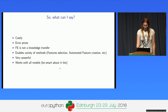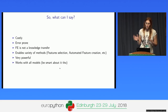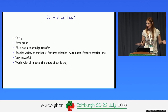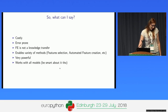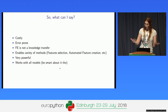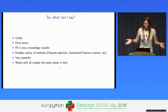Feature engineering is not knowledge transfer, though it can be used as part of it — you train models on certain data that at first glance has nothing to do with your task. By unwrapping features you create even more features, and then you can use feature selection or automatic feature creation because you have way more space to work with.